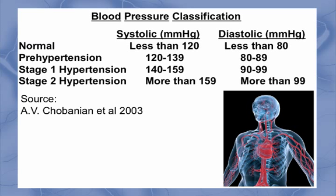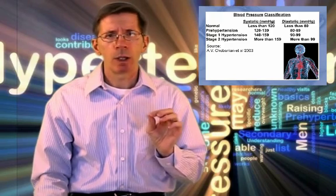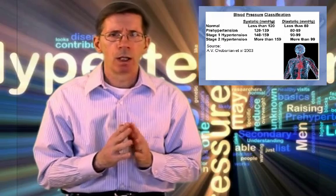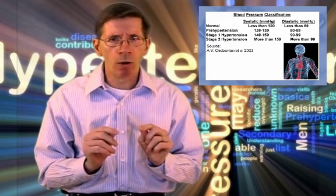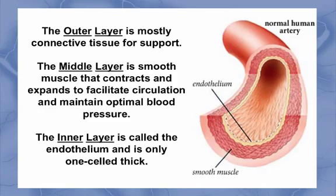If your reading exceeds 160 over 100, then you're in a very dangerous category and you need to seek medical intervention to help bring it under control. Given these numbers, it's important to understand some of the contributing factors for seeing an elevation in blood pressure. As I said in the first video, high blood pressure can have multiple causes. This video cannot address all of them, but let's look at several major contributing factors. We first need to start with your arteries.